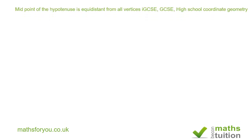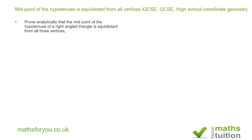In this exercise we shall be looking at a relationship between the midpoint of the hypotenuse of a right angle triangle and all three vertices. This is an AS level GCSE, IGCSE additional mathematics type question. It says: prove analytically that the midpoint of the hypotenuse of a right angle triangle is equidistant from all three vertices.